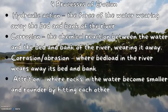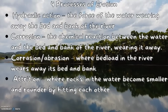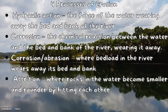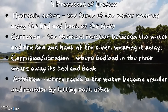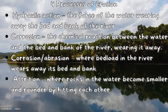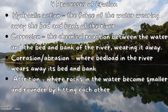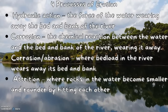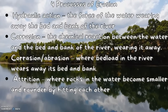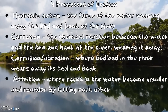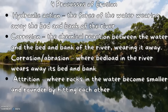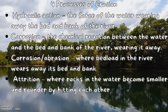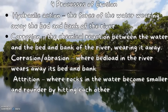Corrosion is the chemical reaction between the water and the bed and bank of the river, wearing it away. Corrasion or abrasion is where bed load in the river wears away its bed and bank by scraping along the floor. Attrition is where rocks in the water become smaller and rounder by hitting each other.